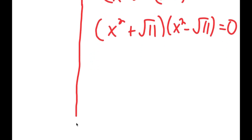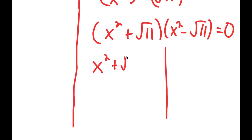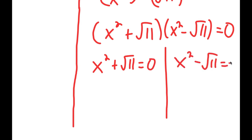Again, I get two equations: x squared plus the square root of 11 equals 0, and x squared minus the square root of 11 equals 0.